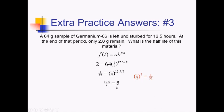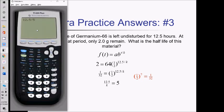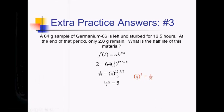Using this to solve for K: multiply by K and divide by 5, giving 12.5 over 5. The calculator gives 2.5. Since T was in hours, the half-life is 2.5 hours.